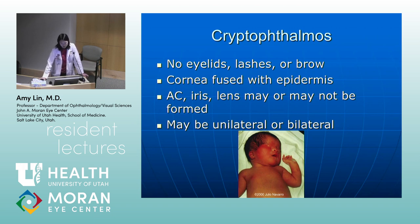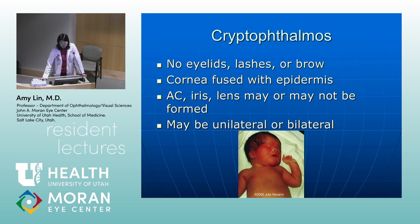Cryptophthalmos is a condition where there are no eyelid fissures or eyebrows and the cornea is fused with the epidermis. There may or may not be an anterior chamber, iris, or lens, and this can be unilateral or bilateral.